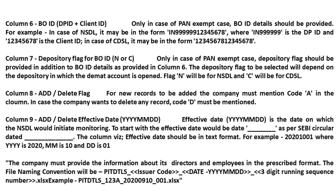Column 6 - BOID (DPID plus Client ID). Only in case of PAN exempt cases should BOID details be provided. For example, in case of NSDL, it may be in the form IN999999 12345678, where IN999999 is the DPID and 12345678 is the Client ID. In case of CDSL, it may be in the form 12345678 12345678. Column 7 - Depository Flag for BOID. Only in PAN exempt cases should the Depository Flag be provided in addition to the BOID details. The flag N is for NSDL and C is for CDSL.